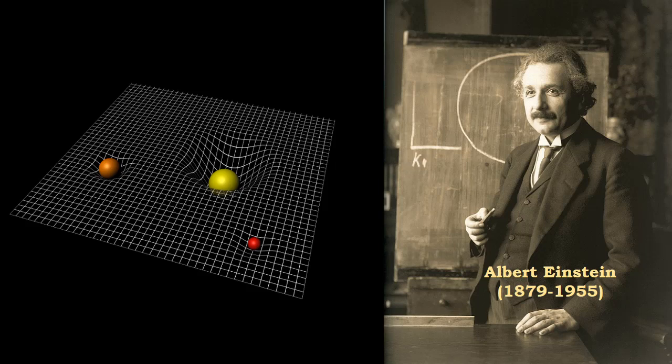Imagine that there are four people holding a tablecloth, each holding one of the corners. And then you put a heavy ball in the middle of the tablecloth so that the tablecloth will curve and go down.